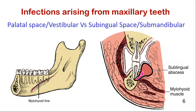The lingual apices of the mandibular teeth, however, will usually drain into the sublingual space or submandibular space depending upon whether they are cephalad or caudal to the mylohyoid muscle, respectively.